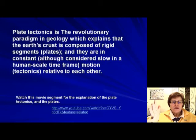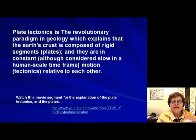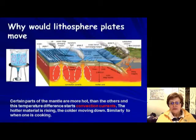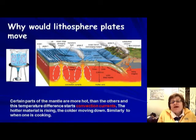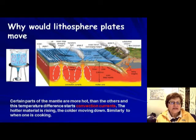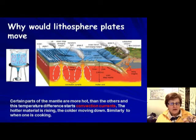This theory explains that the Earth's crust is composed of huge rigid plates that are constantly in motion relative to each other — and that's what we're going to learn about. The question is: why would these plates exist and why would they move? The answer goes back to the composition of the Earth.